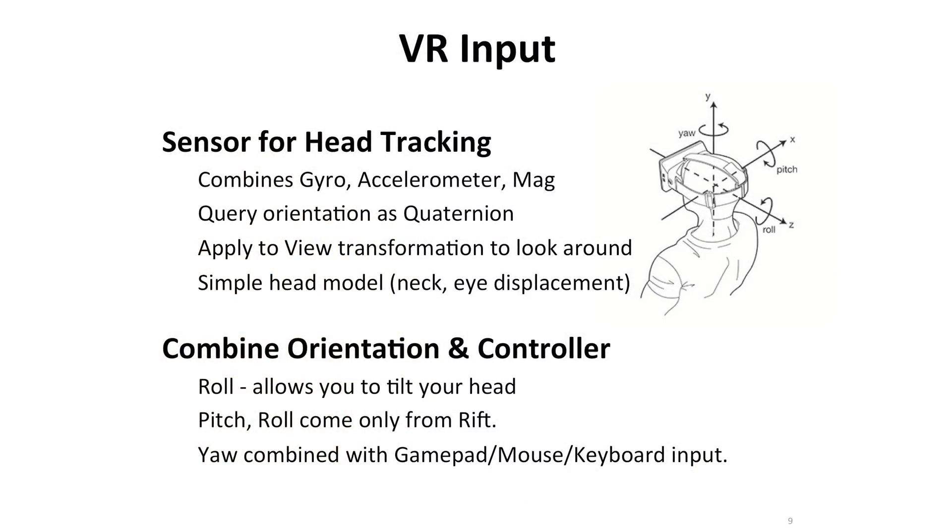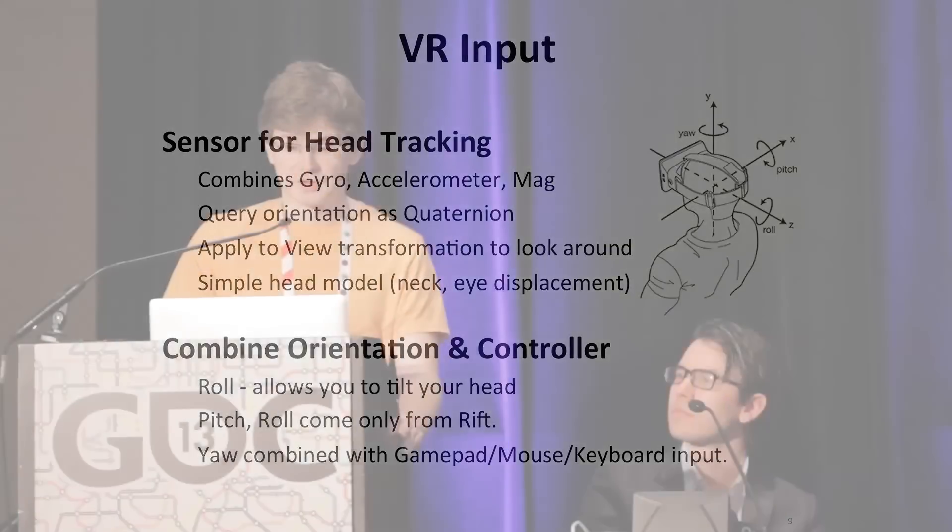As a game developer, you have to combine head tracking input with existing inputs: controller, mouse, keyboard, and other devices. One new input you get is roll — in a normal first-person shooter you look right/left and up/down, but in VR you get a third orientation where you tilt your head. Our recommendation is to always take pitch, yaw, and roll directly from the sensors. You can then add gamepad and mouse inputs on top to control body rotation, while your head controls where you look.